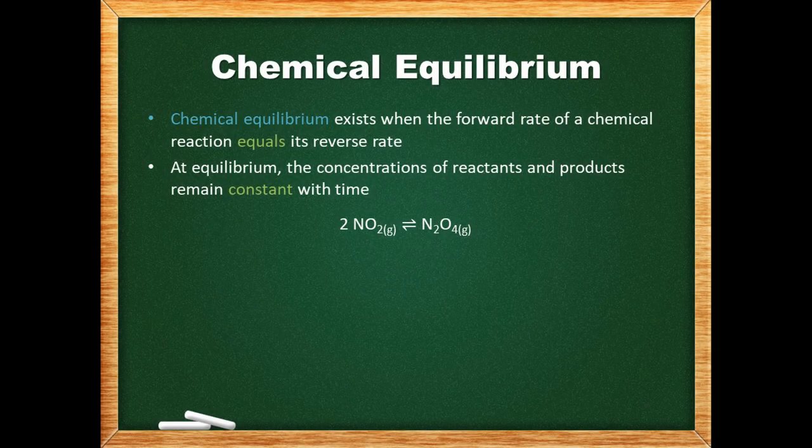Many chemical reactions are reversible, which facilitates an important phenomenon known as chemical equilibrium. This exists when the forward rate of the chemical reaction equals its reverse rate.